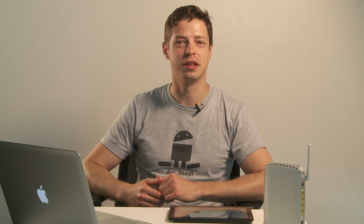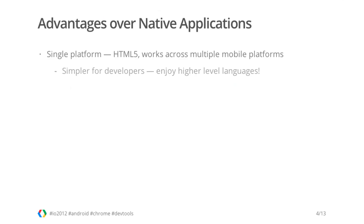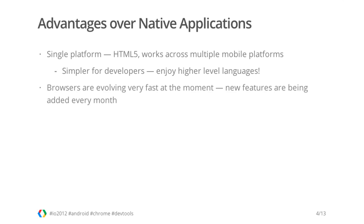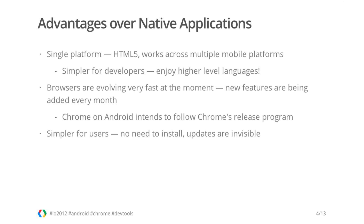Also, languages used in the HTML5 platform — JavaScript, HTML, and CSS — are high-level languages that make programming a lot easier compared to native applications programming. Browsers are evolving very fast; new features are added literally every month. Having ported Chrome to the Android platform, we intend to follow Chrome's release program and provide beta and developer channels for you to preview the new features. It's also simpler for users to get access to websites as they require no installation procedures, and updates to new versions are invisible because they don't need modifications on the client.